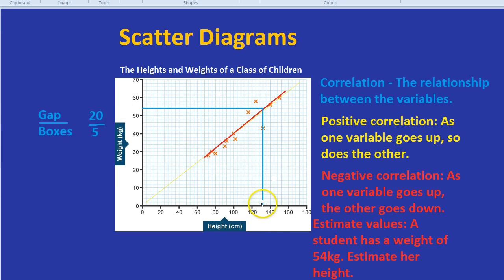In which case, this student with a weight of 54 kilograms, we can estimate has a height of 124, 128, 132 centimeters.